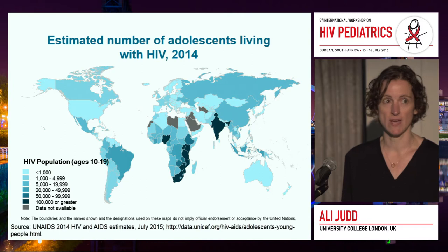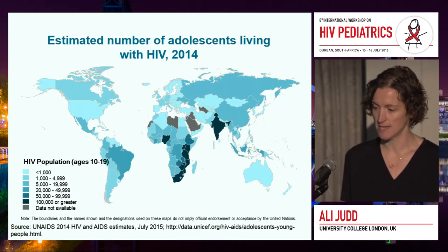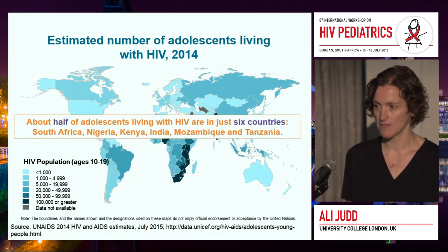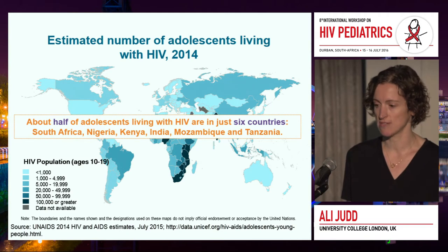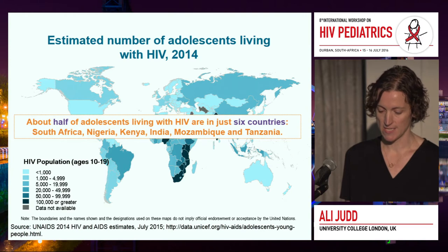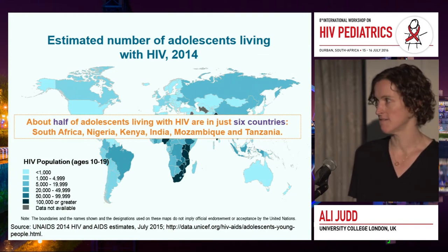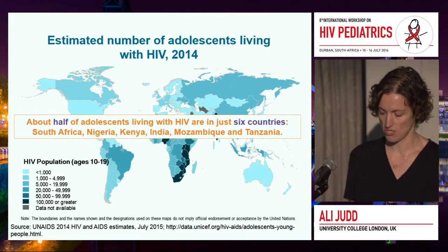This is also UNAIDS data for 2014, showing where adolescents live. The majority are living in resource-poor countries. But interestingly, around half of adolescents are living in just six countries: South Africa, Nigeria, Kenya, India, Mozambique, and Tanzania — giving us a very clear idea of where we might wish to focus our interventions.